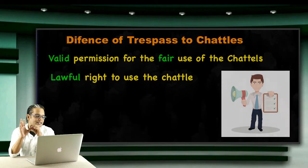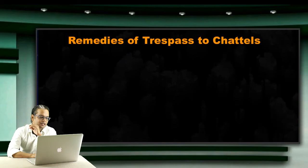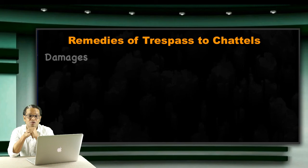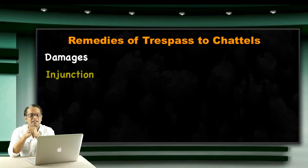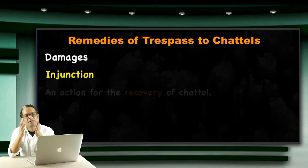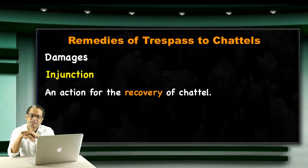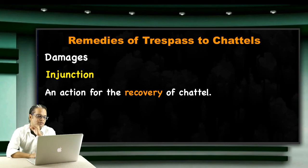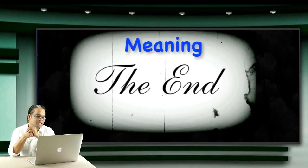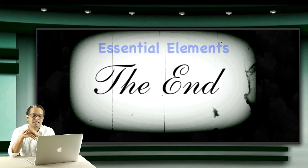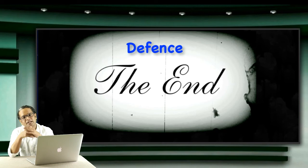These two are the defenses. And the remedies against trespass to chattels are: first, damages; second, injunction; and third, recovery of that chattel. These are the three remedies for trespass to chattels. We have discussed the meaning and concept of trespass to chattels, then the essential elements, and then defenses and remedies.